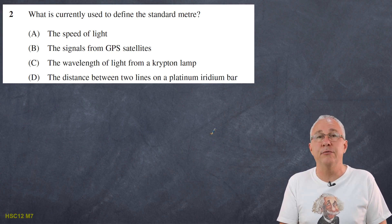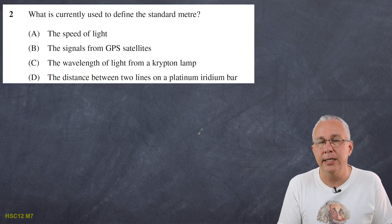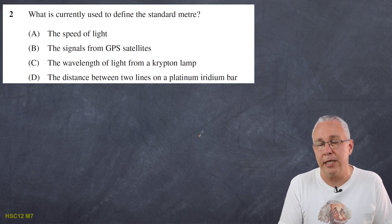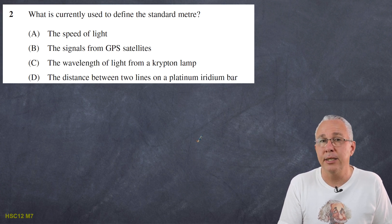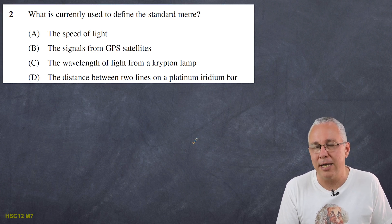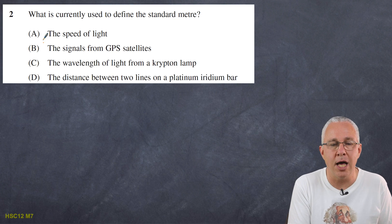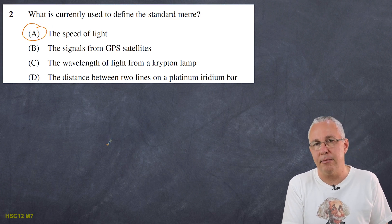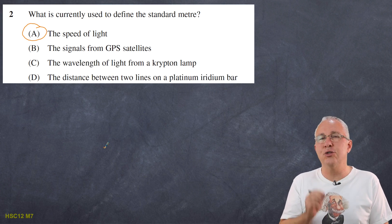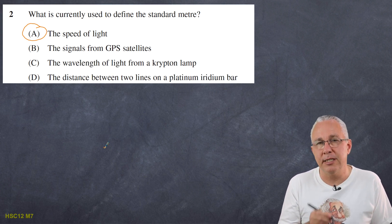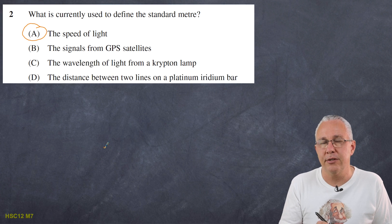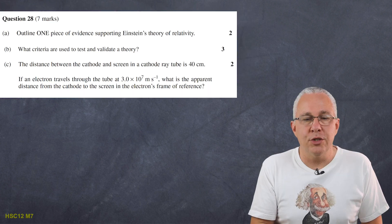Question 2 from the 2012 paper: what is currently used to define the standard metre? This is simply a recall question. Ultimately, the definition of a metre is the distance light travels in 1/299,792,458 seconds — so it is based on the speed of light. The speed of light is used to define the standard metre. I have a dedicated video on this topic and I'll put the link above.